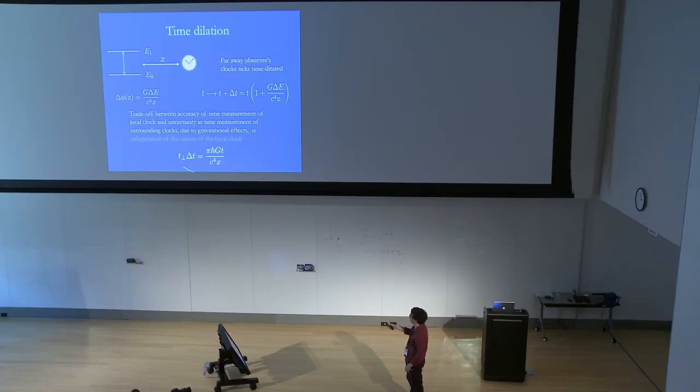This is expressed in this equation here, which is a product of two uncertainties. One is the orthogonalization time and the other is the uncertainty in the time dilation. As we see, the product does not depend on the energy difference of the clock. This means it does not depend on the particular constitution of the clock we choose to measure time. Whatever clock we choose, we will have this trade-off here.